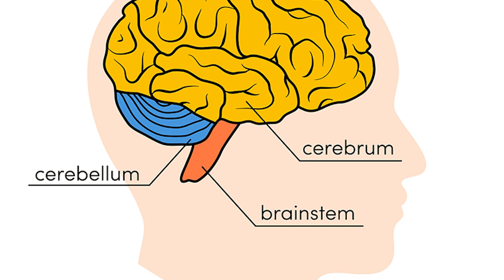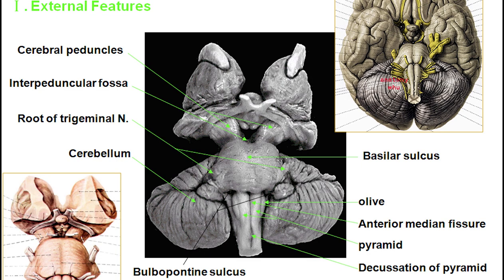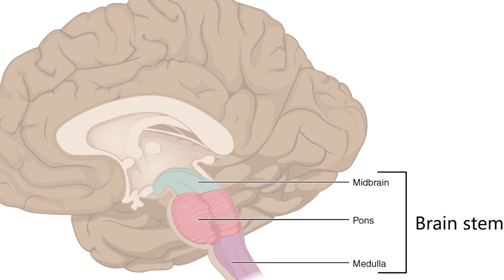Ten of the 12 pairs of cranial nerves either target or are sourced from the brainstem nuclei. The nuclei of the oculomotor nerve and trochlear nerve are located in the midbrain. The nuclei of the trigeminal nerve, abducens nerve, facial nerve, and vestibulocochlear nerve are located in the pons. The nuclei of the glossopharyngeal nerve, vagus nerve, accessory nerve, and hypoglossal nerve are located in the medulla. The fibers of these cranial nerves exit the brainstem from these nuclei.